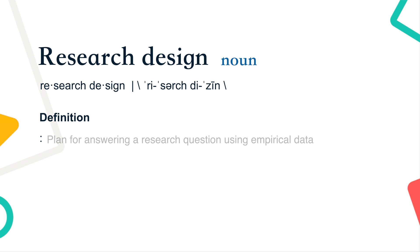A research design is a plan for answering a research question using empirical data. Creating a research design involves making a series of choices about the type of research you'll do and how you do it.